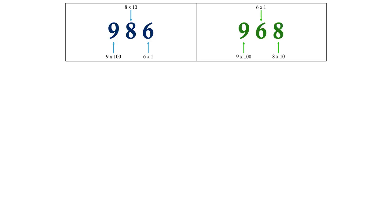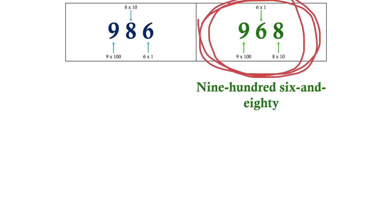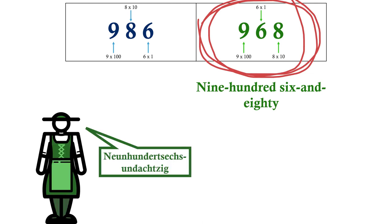But that's not the order we say them in. Well, it used to be. This used to be called 900, 6 and 80, and that's still how it's said in other languages like German and Danish.